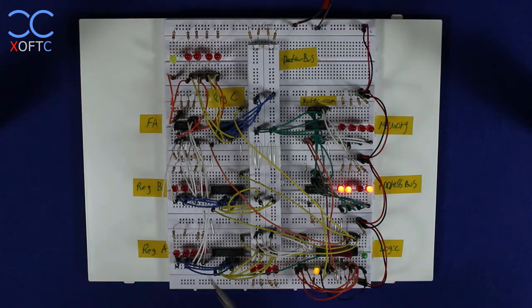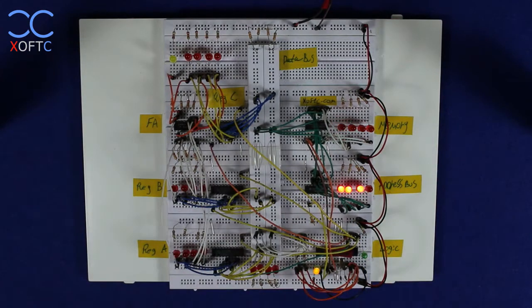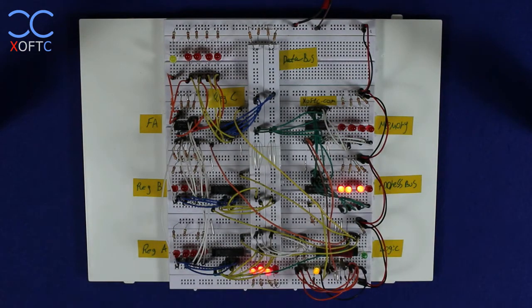then ends and repeats itself every time from new. So you can see here right now we had a value and it was written and this is how this cycle goes about.